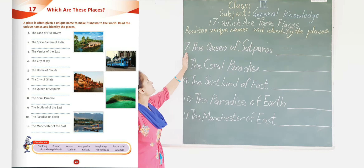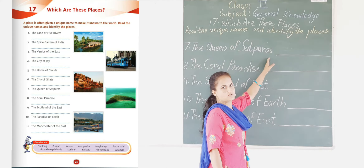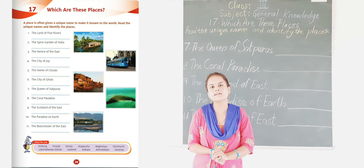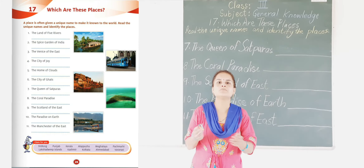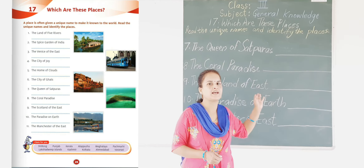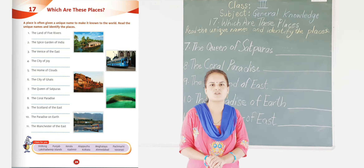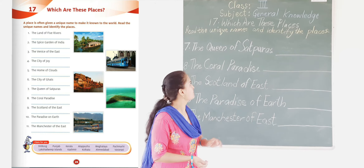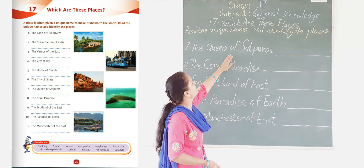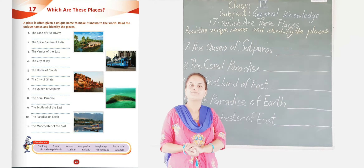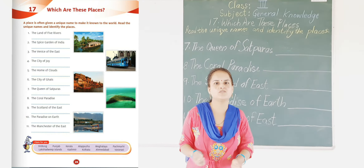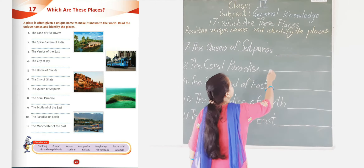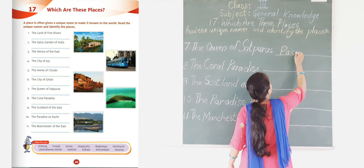Now the next one is the Queen of Satpura. This is also a hill station. It is located in Madhya Pradesh, similar to Mahabaleshwar in Maharashtra. It is Pachmarhi. Pachmarhi is called the Queen of Satpura, or Satpura ki Rani.